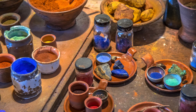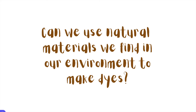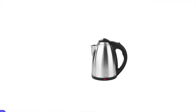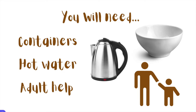Rocks and minerals are also common sources of pigments, and they're used a lot in creating paints. So can we use natural materials that we find in our environment to make dyes? We can, and we're going to try out some experimentation and see if we can make it work. You will need some different containers. We're using glass bowls because they are heat proof, and we ended up also using Tupperware containers later on.